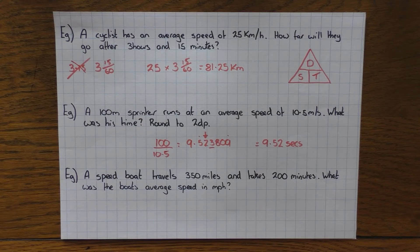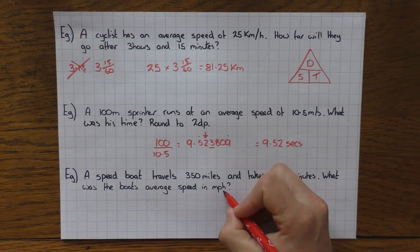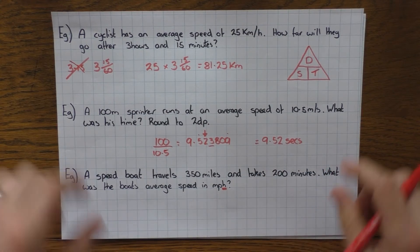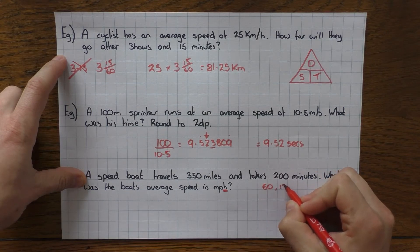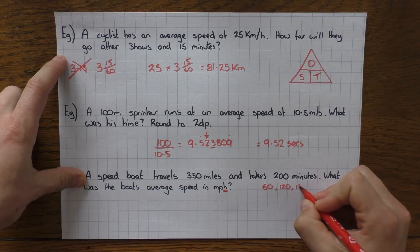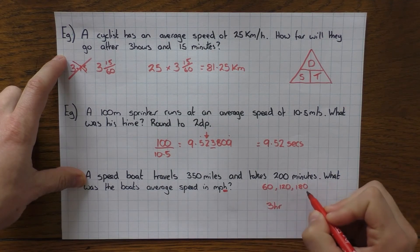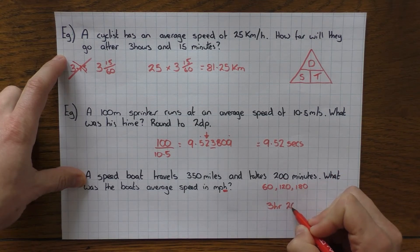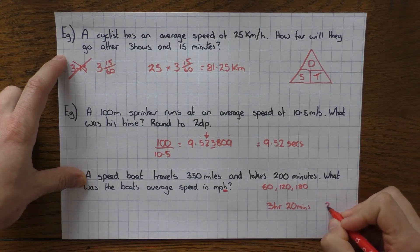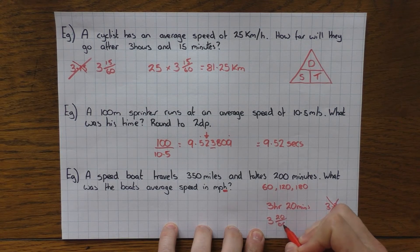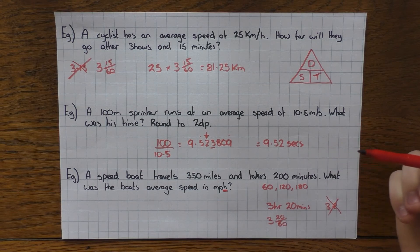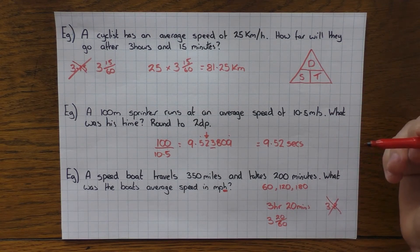And the last example in this video, a speedboat travels 350 miles and takes 200 minutes. What was the boat's average speed in miles per hour? So here we go, per hour. So this is what we need to do again with our time is convert the minutes into hours. Now, obviously, we've got 60 minutes in one hour, 120 in two hours, 180 in three. So I have three hours. And then three hours is 180 minutes. What's left? I have 20 minutes. And again, it's not 3.2. It's not going to be that. I'm going to do exactly the same thing I did up here, which is three hours and then 20 minutes out of 60. And again, if you can spot it's three hours and a third, that's absolutely fine. But I just think that with a calculator, it's just so much easier to leave it like that. But it's up to you.